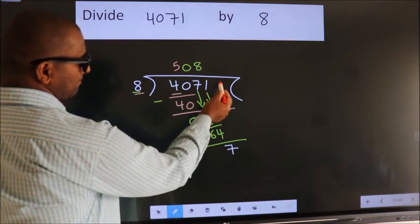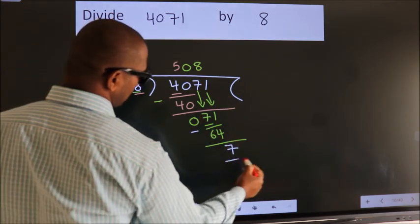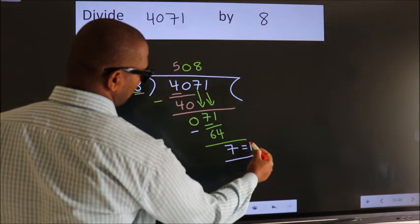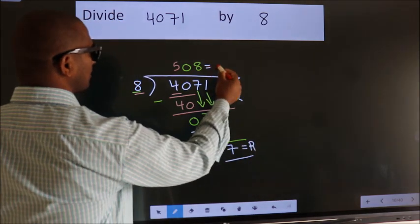No more numbers to bring it down. So we stop here. This is our remainder. This is our quotient.